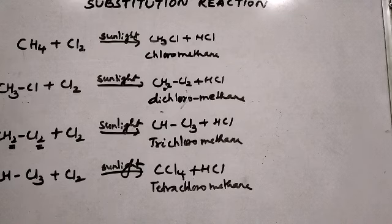So CHCl₃ is chloroform and CCl₄ is carbon tetrachloride. When methane reacts with chlorine in the presence of sunlight, a mixture of chloromethane, dichloromethane, trichloromethane, and tetrachloromethane is obtained.